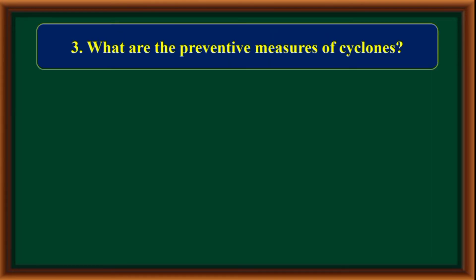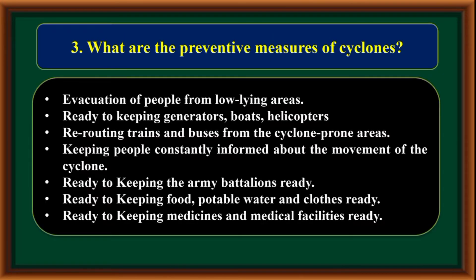What are the preventive measures of cyclone? Evacuation of people from low-lying areas; keeping generators, boats, and helicopters ready; rerouting trains and buses from cyclone-prone areas; keeping people constantly informed about the movement of the cyclone; keeping the army battalions ready; keeping food, portable water, and clothes ready; keeping medicines and medical facilities ready.